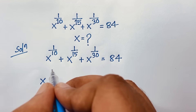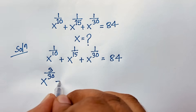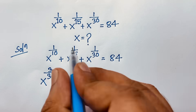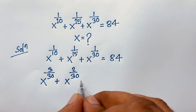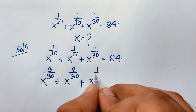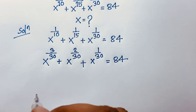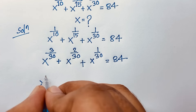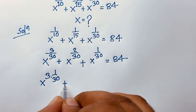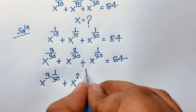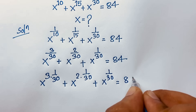Now I can see that x to the power 1 over 10 can be written as 3 over 30, since 30 divided by 3 is 1 over 10. Then x to the power 1 over 15 becomes 2 over 30, since 30 divided by 2 is 1 over 15. So we rewrite the expression with x to the power 3 over 30, plus x to the power 2 over 30, plus x to the power 1 over 30, equal to 84.